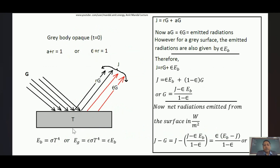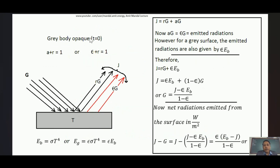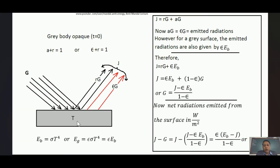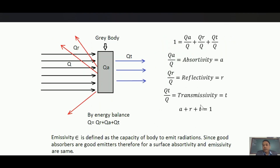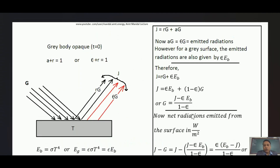Suppose this is a gray body and opaque. Opaque means radiations cannot pass through. If radiation falls on it, only two things can happen — it will be absorbed or reflected. For an opaque body, T equals 0, so only A plus R equals 1. Since absorptivity and emissivity are the same, we can write emissivity plus R equals 1.